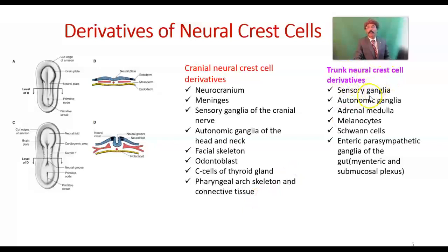Trunk neural crest cell derivatives are: sensory ganglia, autonomic ganglia, adrenal medulla, melanocytes, Schwann cells, and enteric parasympathetic ganglia of the gut — like the myenteric plexus present between the longitudinal muscle layer and the smooth muscle layer of the intestine, and the submucosal plexus. These are mostly parasympathetic fibers derived from neural crest cells. If they don't migrate to the intestinal wall, we get congenital megacolon, also called Hirschsprung's disease.